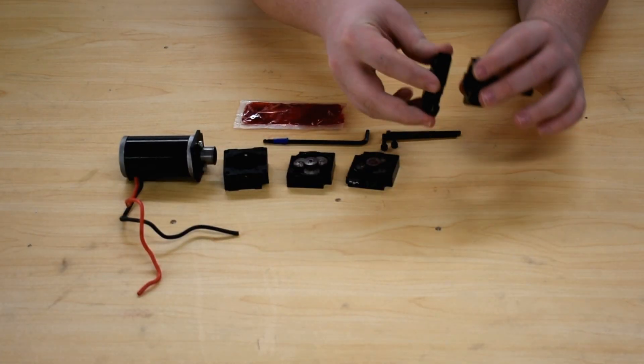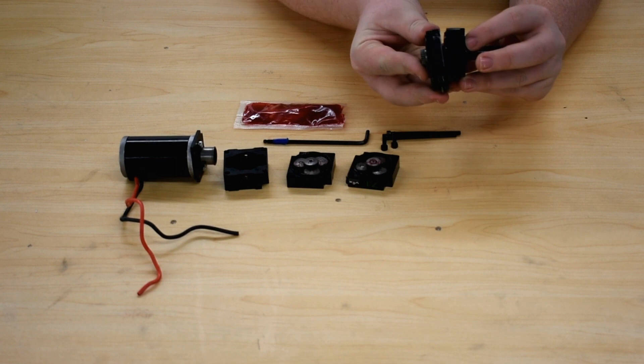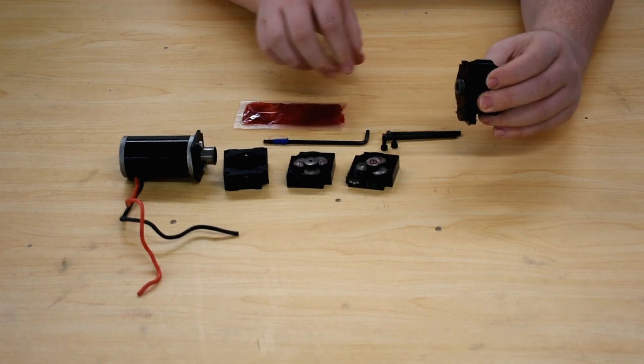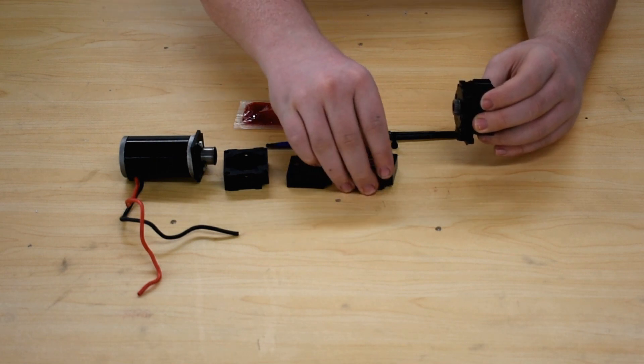Now assemble the versa planetary gearbox. Place the versa encoder nearest to the output shaft. Be sure to lubricate the inside of the encoder with white lithium grease.